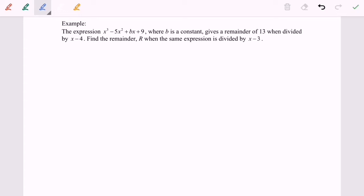So in here I would write P(x) equals to x cubed minus 5x squared plus bx plus 9. And by substituting the value 4, I will have 13 as a remainder. So now for the first part, I'm going to find b.